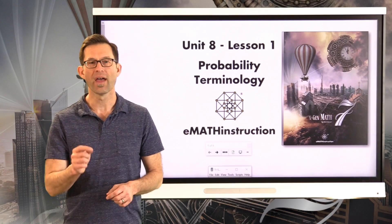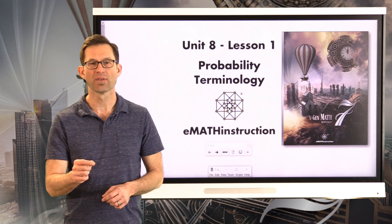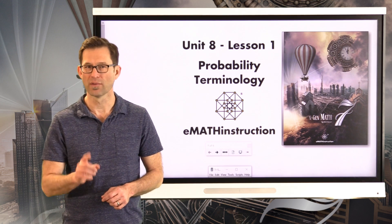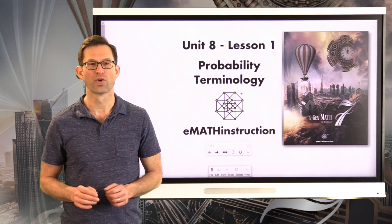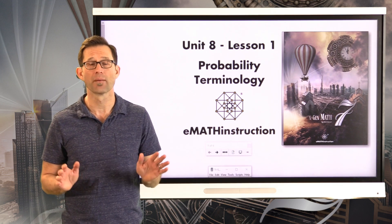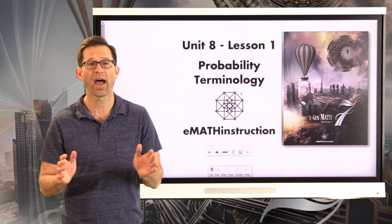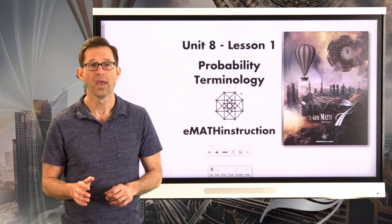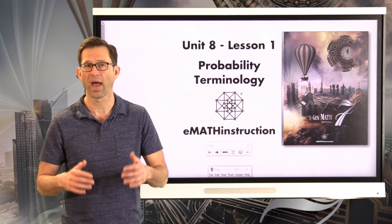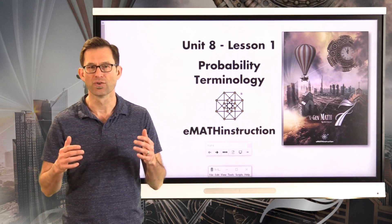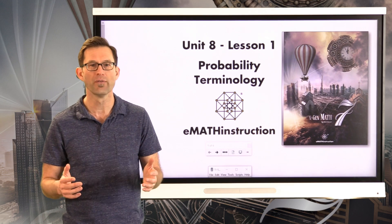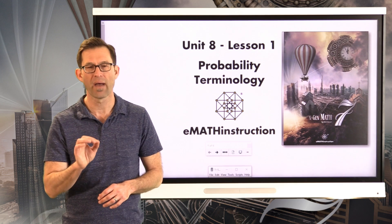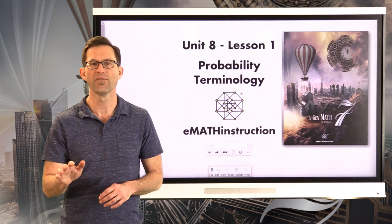Hello and welcome to another NGen Math 7 lesson by eMath Instruction. My name is Kirk Weiler and today we're going to be doing Unit 8, Lesson 1 on probability terminology. This whole unit is on probability, which is a fantastic and really cool branch of mathematics — one of the major branches along with algebra, geometry, and trigonometry. It's a really cool branch of math and very different than almost any of the other ones.